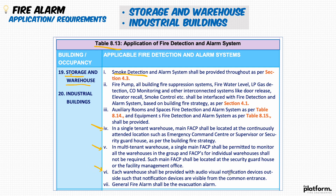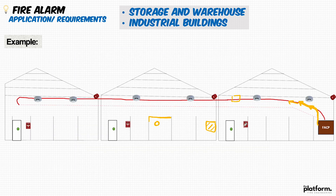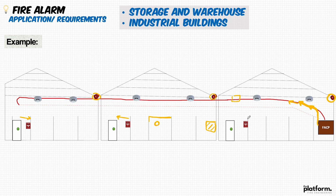Each warehouse shall be provided with audio-visual notification devices outside, visible from the common entrance. The number of devices will be based on the distances and the design of the area. In addition, a manual call point should be added near each exit, within a distance not more than 1.5 meters, as we learned from previous lectures. The design and selection of the fire alarm system is as simple as going through the code, understanding the requirement for each occupancy, and applying what you've learned about device distances and selection.